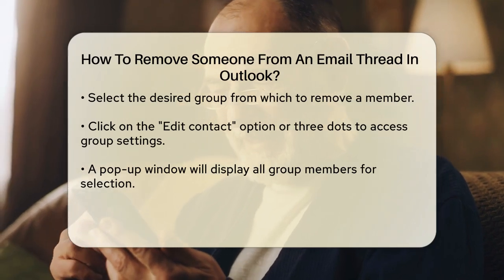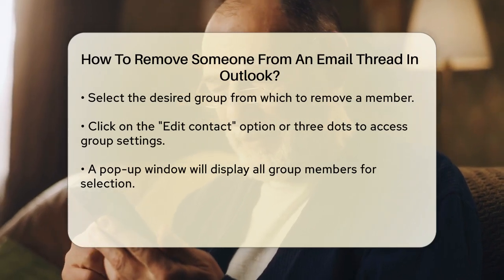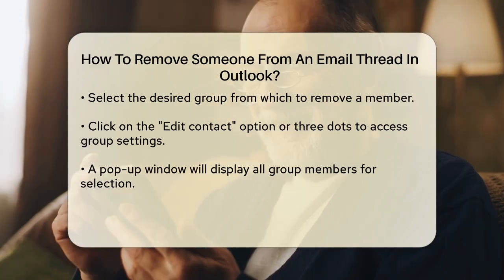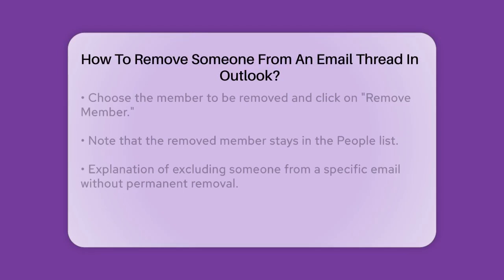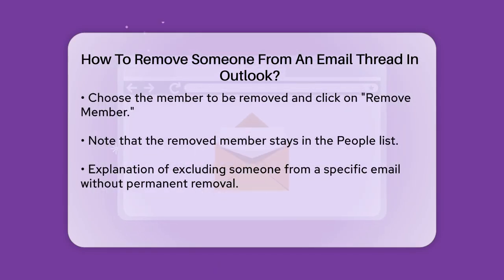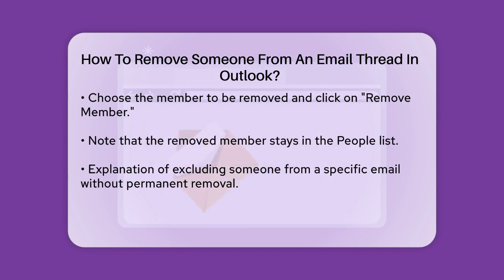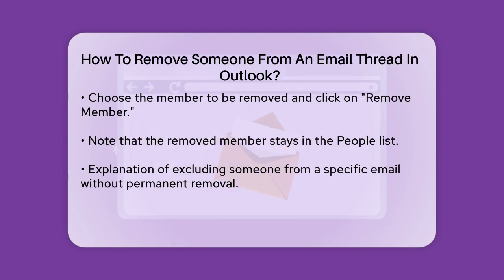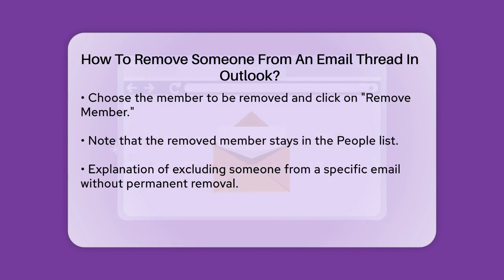This action will remove the selected member from the group, but they will still remain in your People list. If you're looking to exclude a specific person from an email without removing them from the group permanently, the process is a bit different.